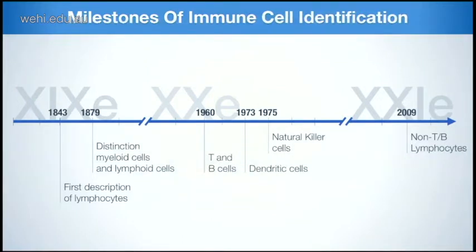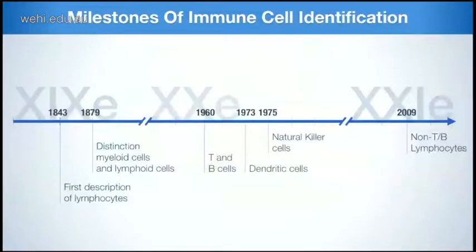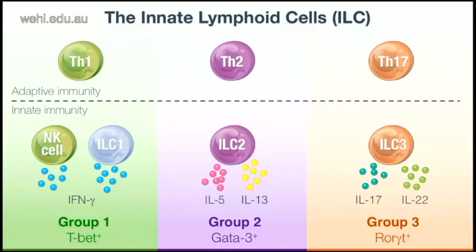Paul Ehrlich, thanks to a new staining protocol, could distinguish between myeloid cells and lymphoid cells. We had to wait almost another century to distinguish between B cells and T cells. Later, Raftemann identified dendritic cells, and a few years later NK cells were identified. And very excitingly, a new immune cell type had been identified which was non-T and non-B cell lymphocytes.